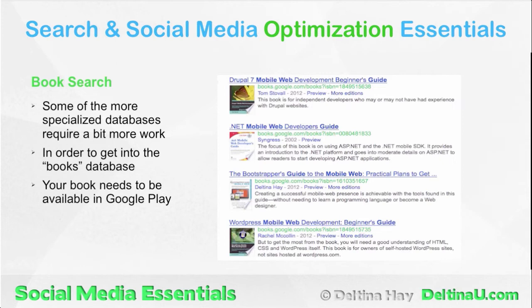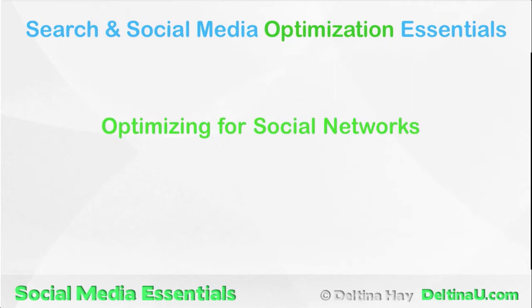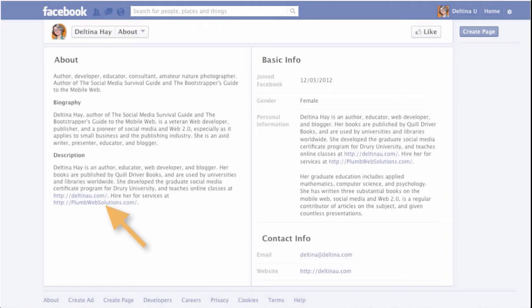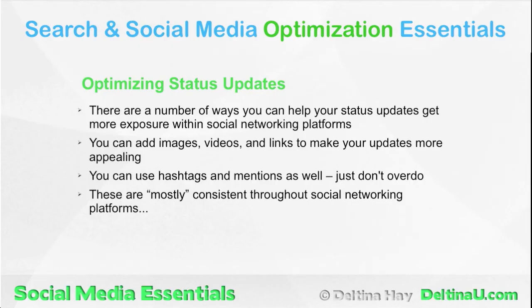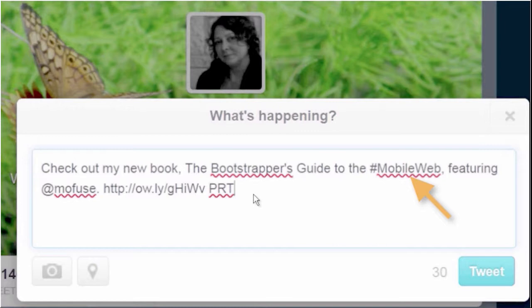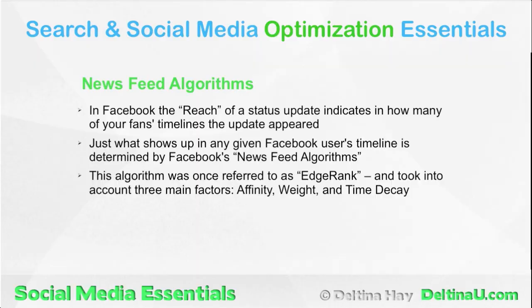We examine how Google Plus Your World can help get our content better exposure and how to prepare our social media profiles for this type of search. Optimizing for social networks is tackled next, focusing on optimizing page and profile content for Facebook, LinkedIn, Twitter, and Google Plus. Then on to status updates — optimizing keywords using hashtags in Twitter, LinkedIn, and Google Plus.